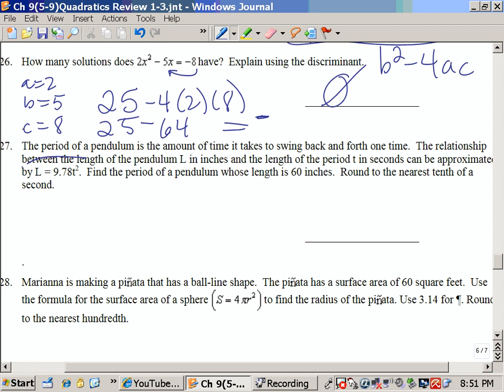Number 27, I have a formula, and they give me the length of 60. So that's going to be 60 equals 9.78t squared. All I need to do is divide by 9.78, and then I'm going to go back and take the square root of both sides.